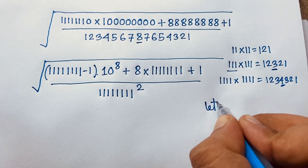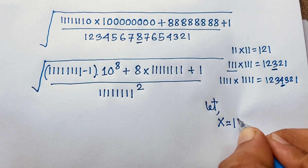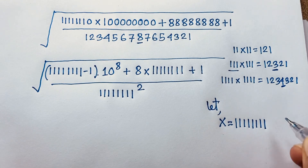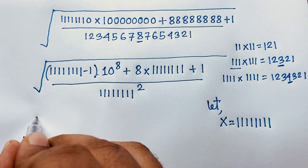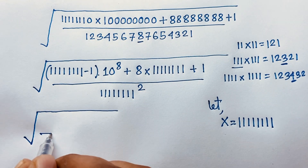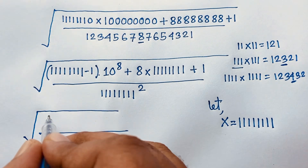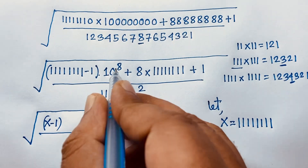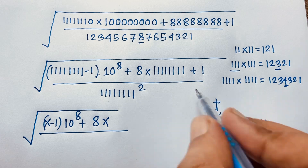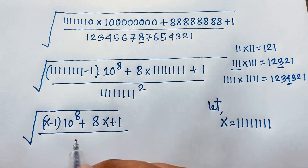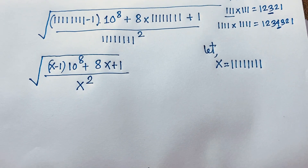Now you can see here is 8 ones, this is 8 ones, this is 8 ones. So if you think here — suppose that x is equal to 1 2 3 4 5 6 7 8 — so you can see here it will be x. This is x. So you can see here it is square root down, and here x minus 1. So you can see it will be x minus 1, times 10 to the power 8, plus 8x — because we let this is x — and here is plus 1 over x to the power 2. This is x, so it will be x squared.